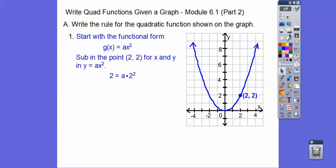Then we get 2 = a times 2². 2² is 4. Divide both sides by 4. When you divide 2 divided by 4, we get a half. So that's it. Then we just put the half in right there. And our equation is going to be g(x) = ½x². Easy.